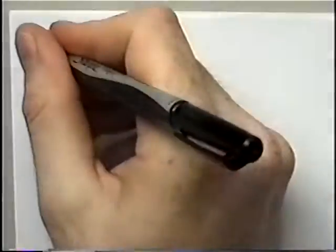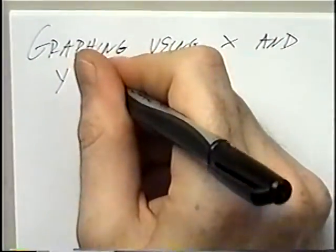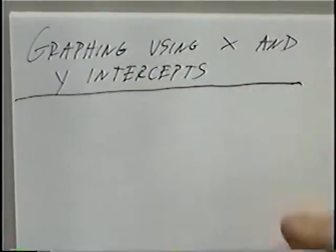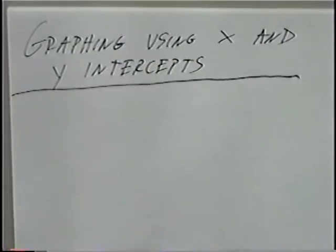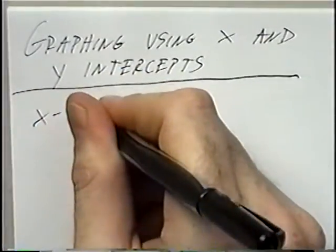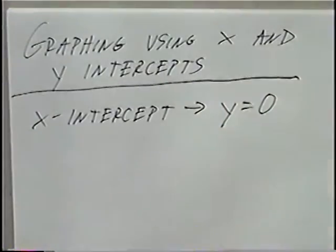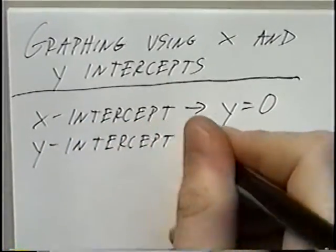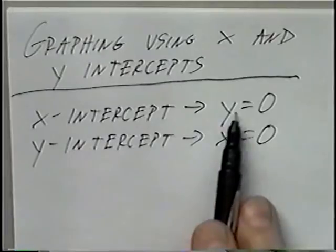The title of the last section today is graphing using x and y intercepts. Intercepts are where the line crosses the x-axis and the y-axis. The x-intercept is where y equals zero, and the y-intercept is where x equals zero. So for each intercept, the opposite variable is equal to zero.